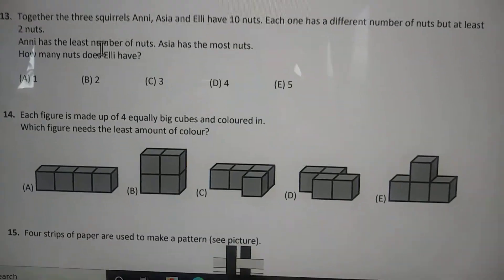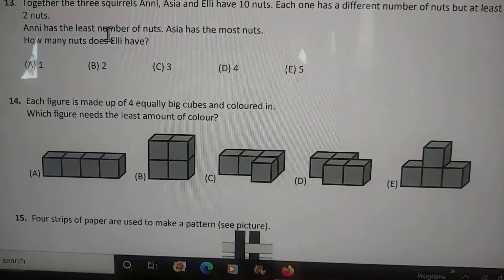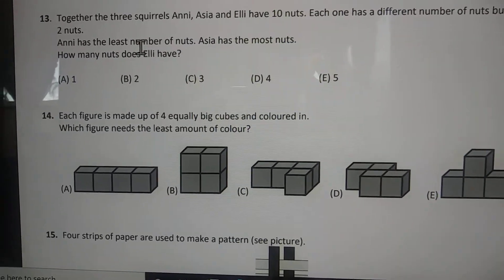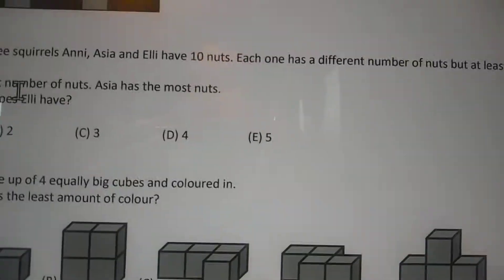The three squirrels Annie, Asia, and Eli have ten nuts all together. They all have a different number of nuts, but at least two each. Annie has the least number of nuts, and Asia has the most nuts.